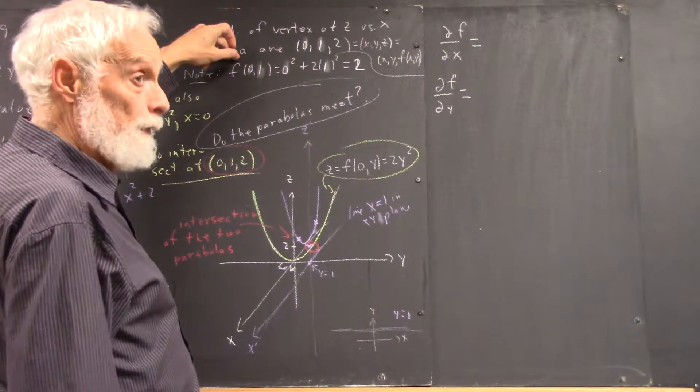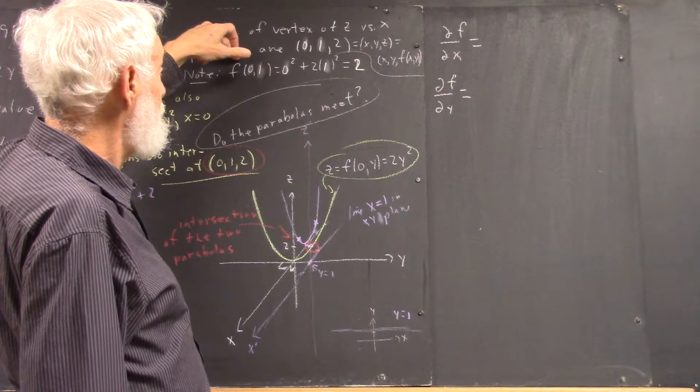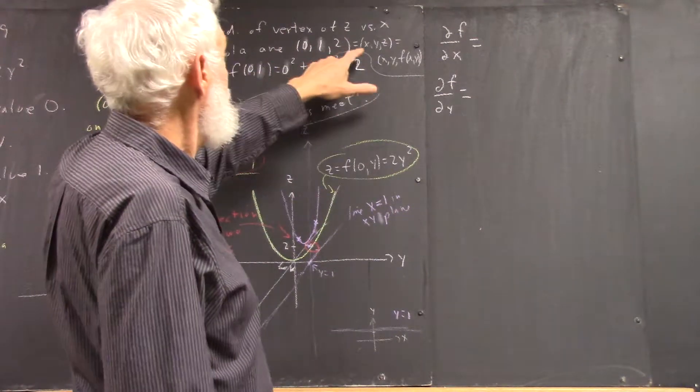So, letting Z equal F(X, Y), we can write this as (X, Y, Z).